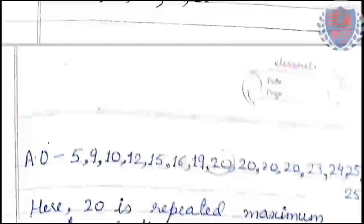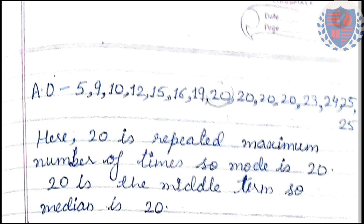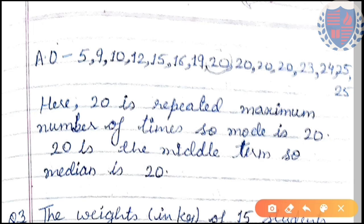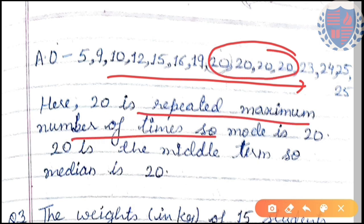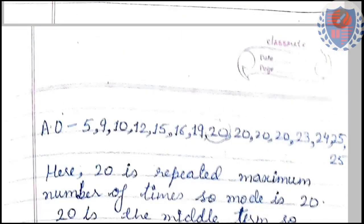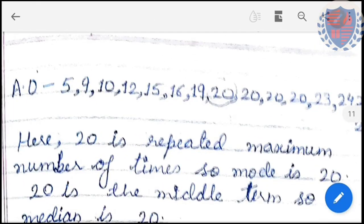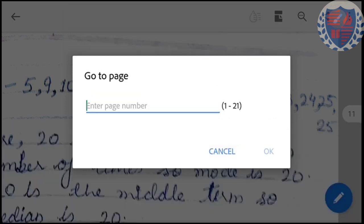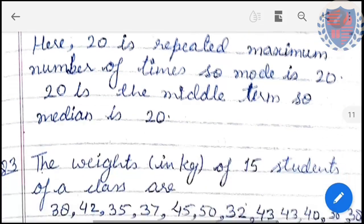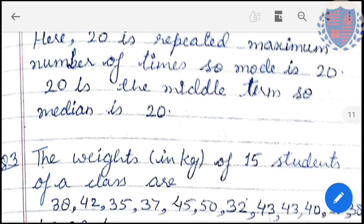Now the exercise: data is given; we need to find both mode and median. First, arrange in ascending order. To find mode, identify the number occurring most frequently — 20 is repeated the maximum number of times, so mode is 20. To find median, count the terms: there are 15 terms, so the middle most term is the 8th value, which is 20. Therefore median is also 20.